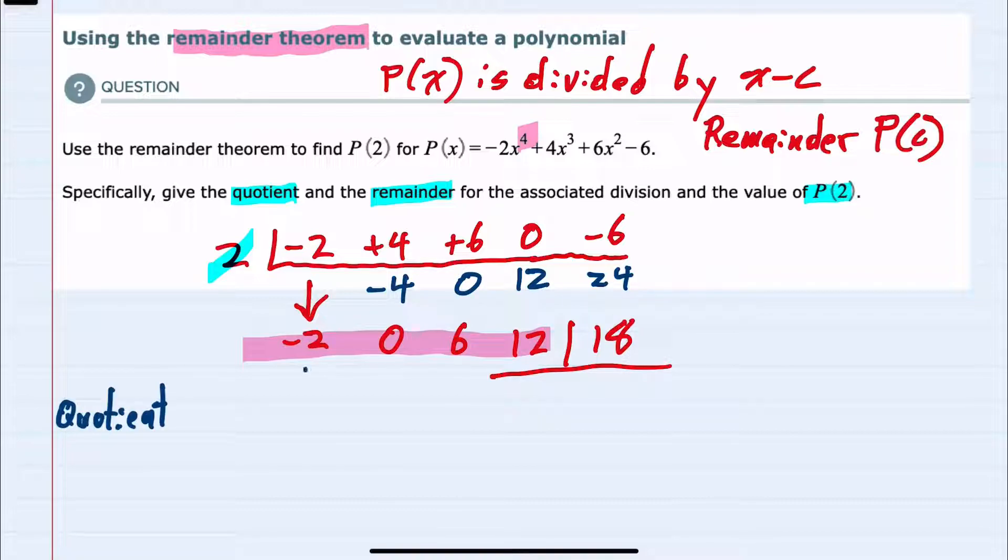So my quotient will be negative 2x³. Decreasing the power by 1 would mean my highest degree is x³. I'm not going to have an x squared term because that coefficient is 0. I will have an x term, 6x, and my constant of plus 12. This would be my quotient.